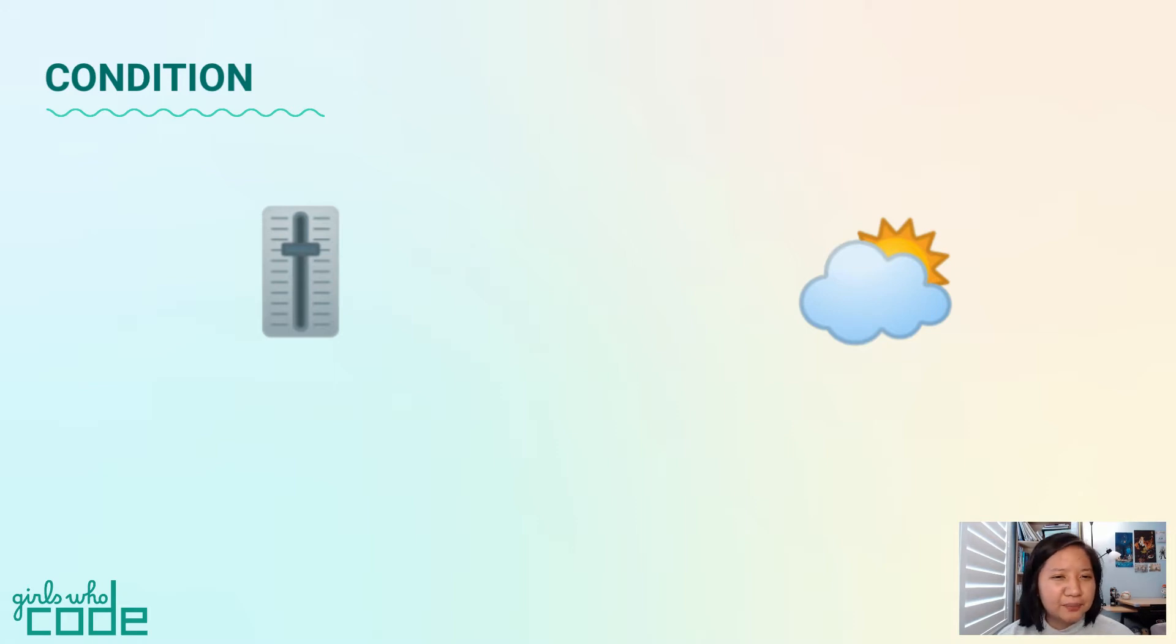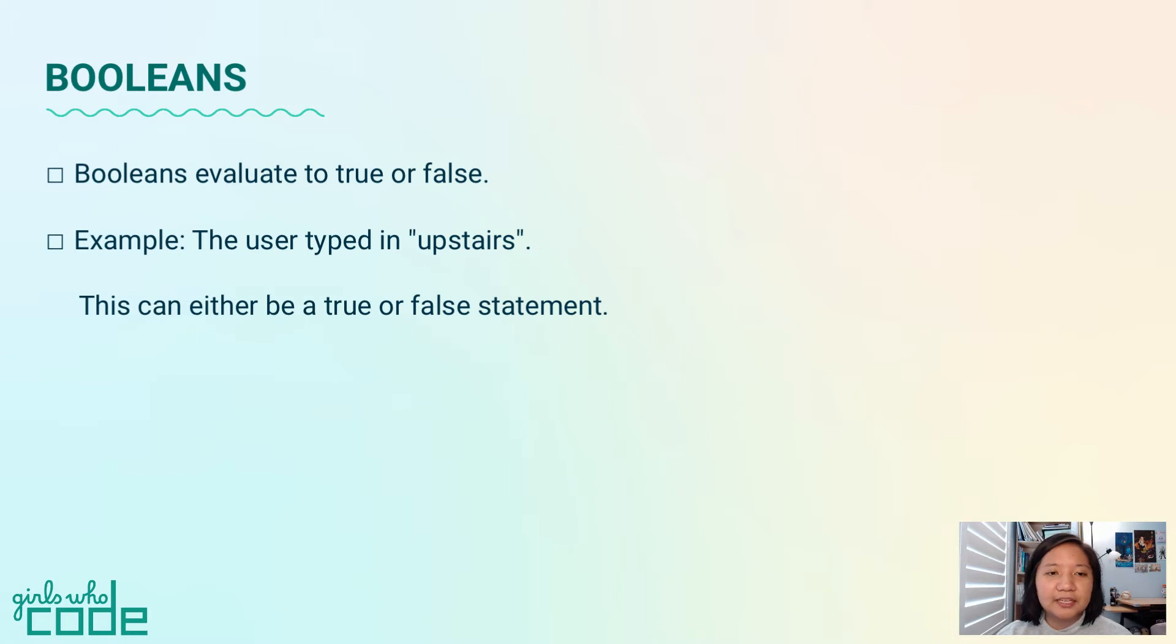How can we check to see if something is true or false in code? The data type boolean will help us out. Booleans evaluate to true or false. For example, the statement the user typed in upstairs - that can either be a true or false statement.